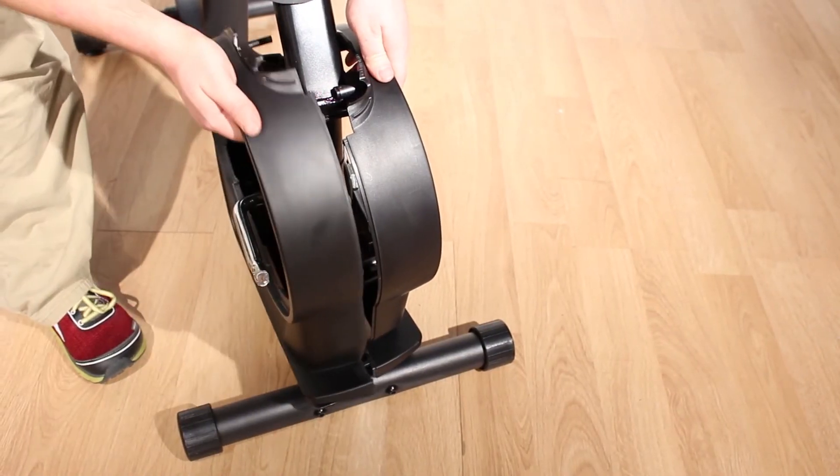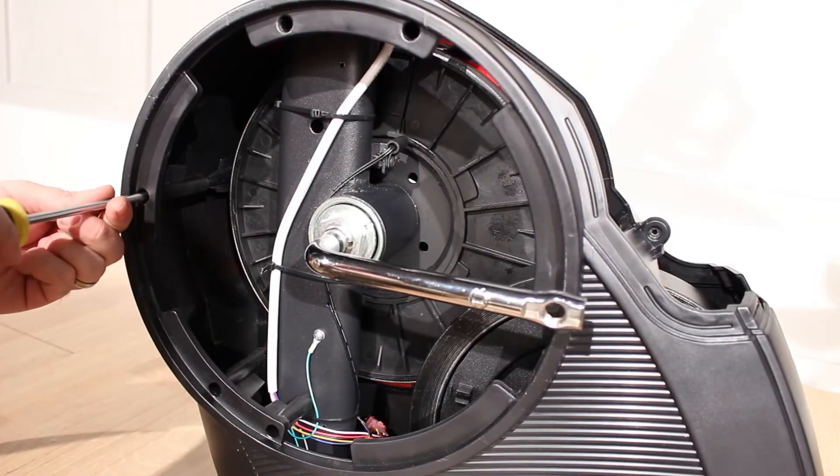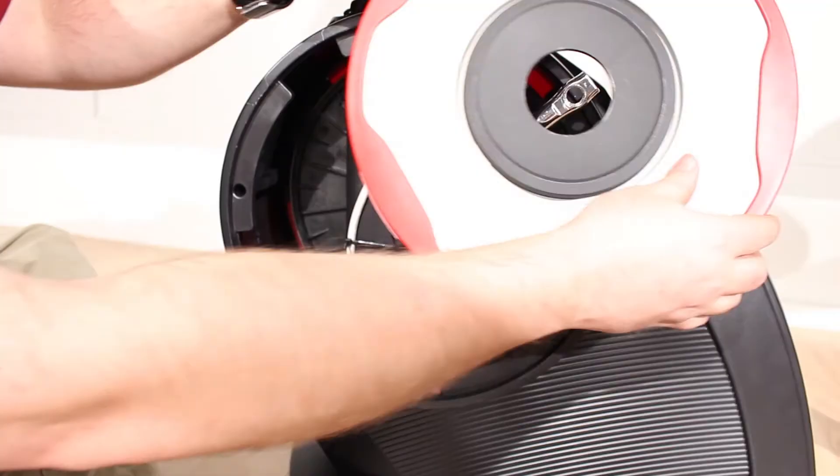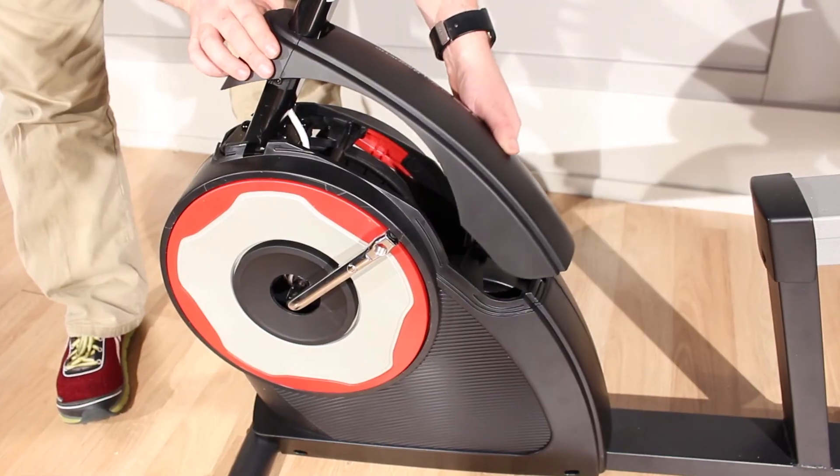Now reattach the plastics that house the crank pulley, but in reverse order: the left and right-hand side shields, the left and right-hand pedal discs, and the upright cover.